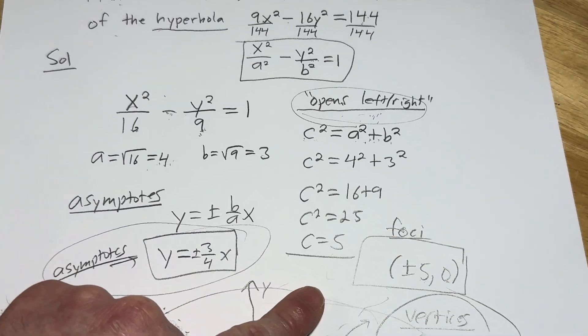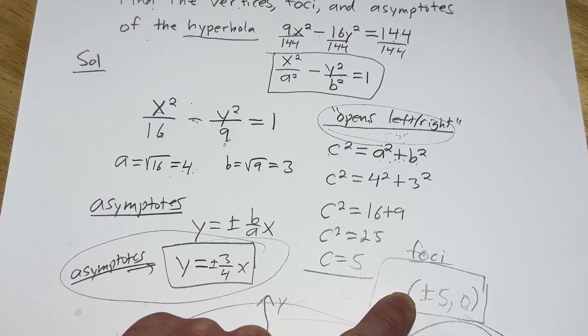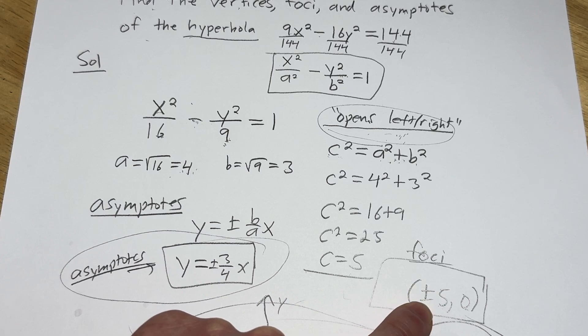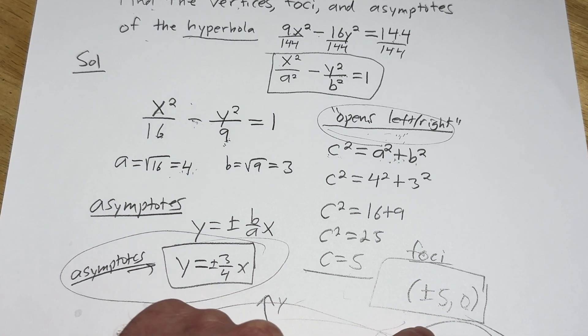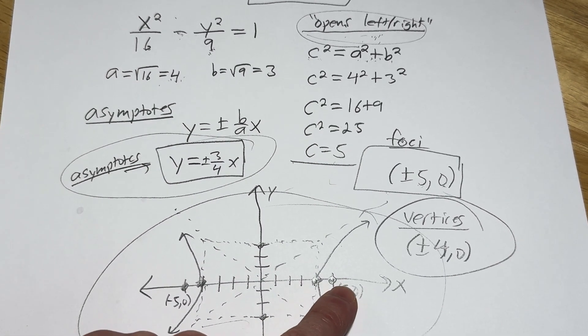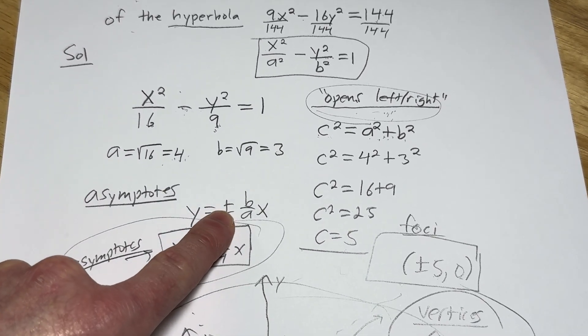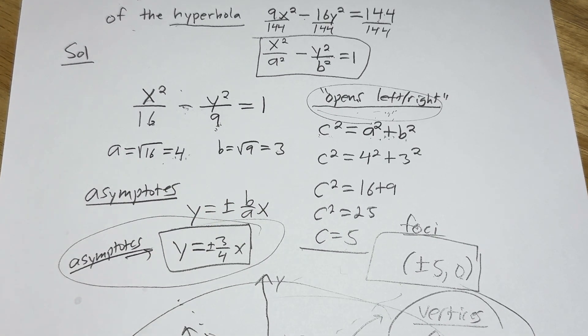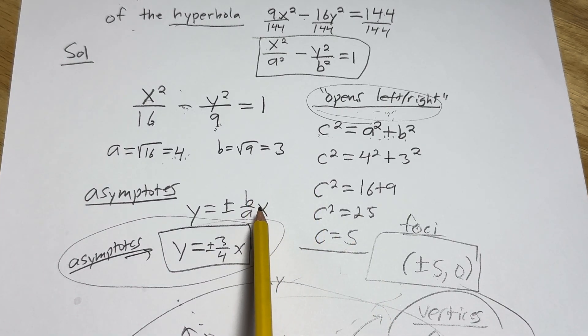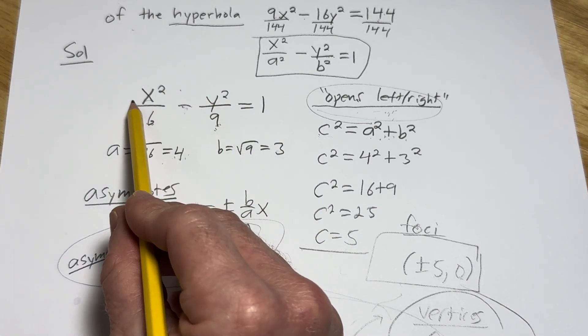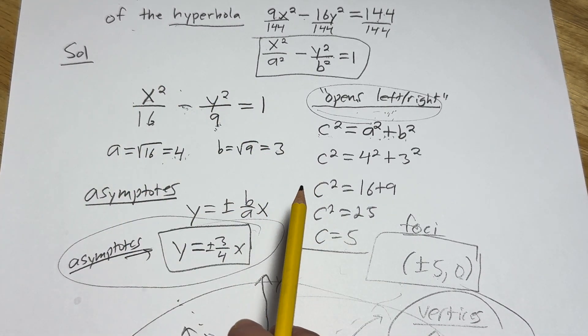I know it's that, by the way, because it opens left and right. And it opens towards the foci. So I know that it's going to be plus or minus five comma zero. As shown here by the graph, it's on the x axis. The asymptotes are given by the formula y equals plus or minus b over a times x. However, if the y comes first, it's a over b times x.